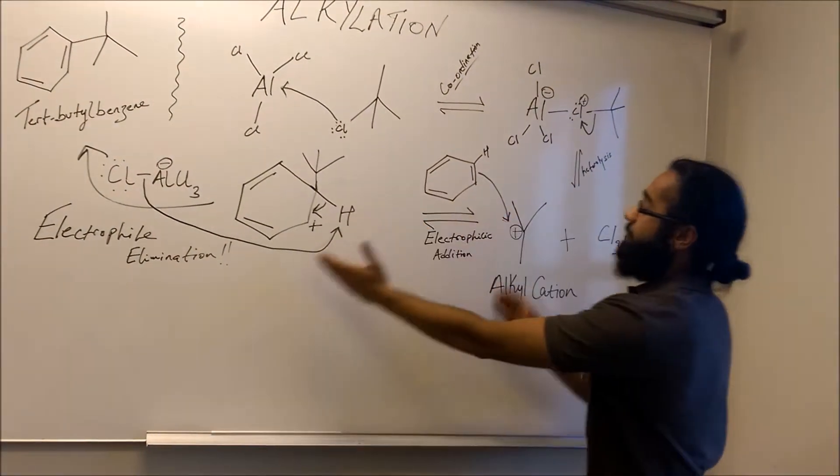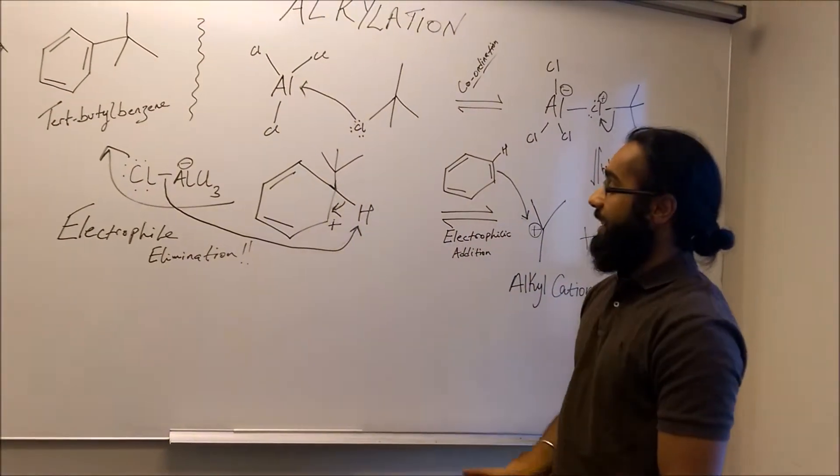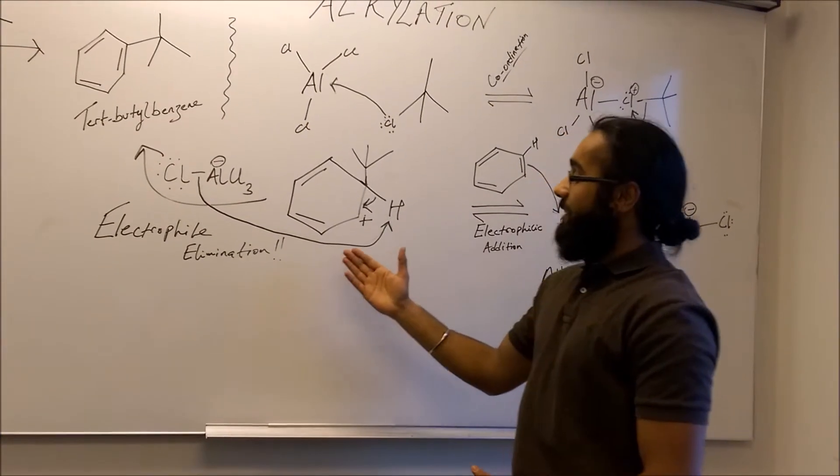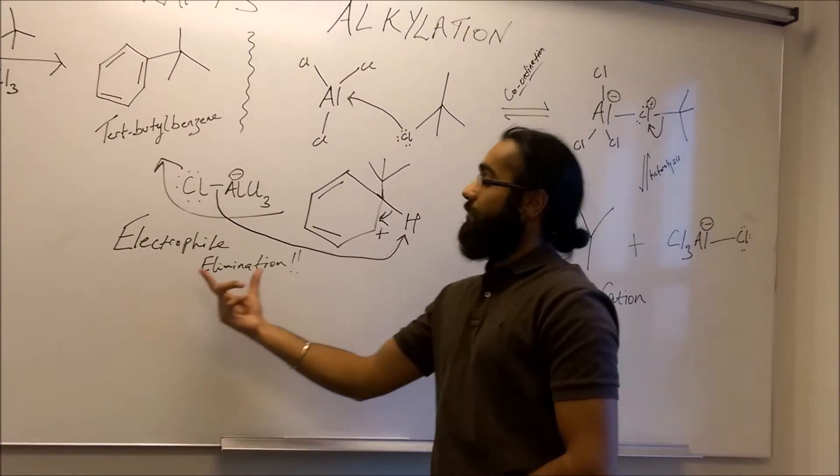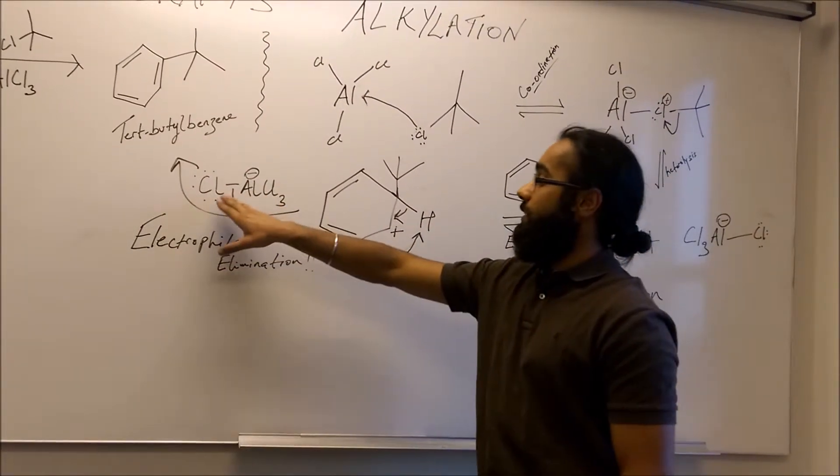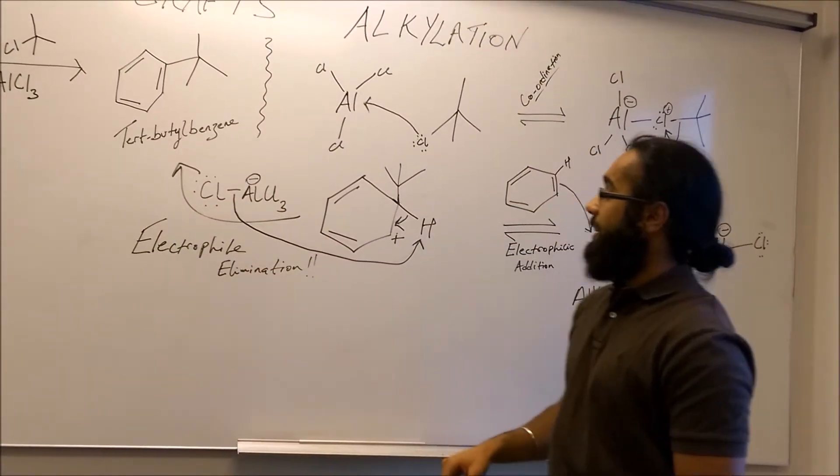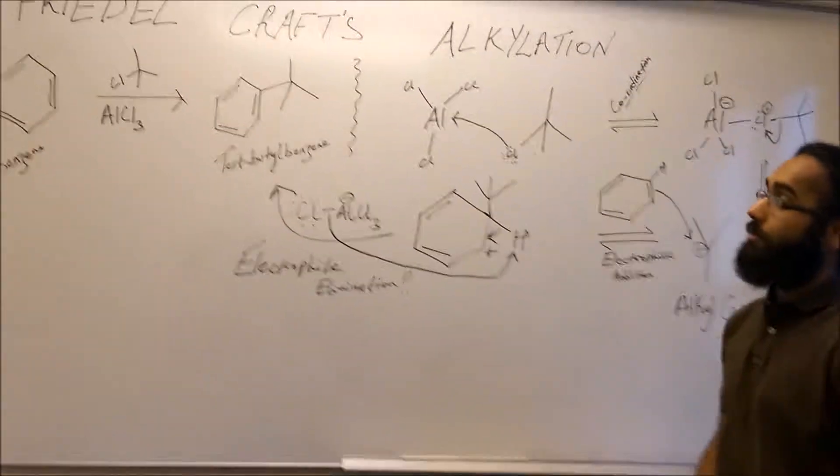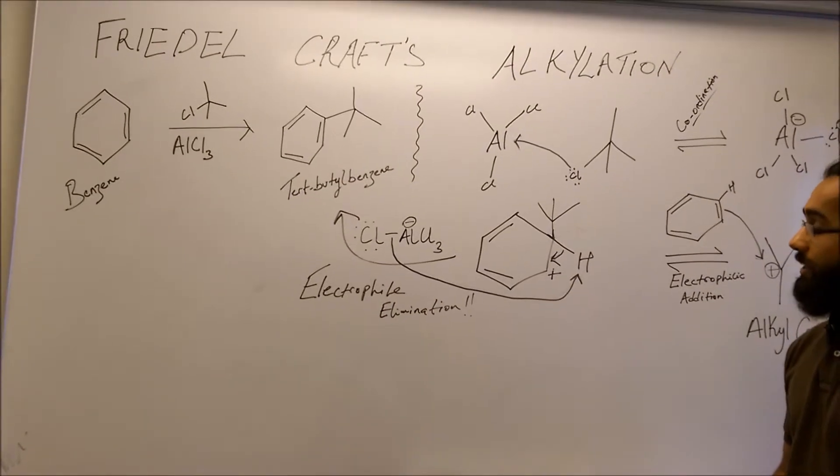Initially this is going to be formed through electrophilic addition, and from here onwards we're going to have electrophilic elimination, which means H is going to be eliminated from the Lewis acid, regenerating the Lewis acid catalyst which is going to be used for the ongoing reaction.